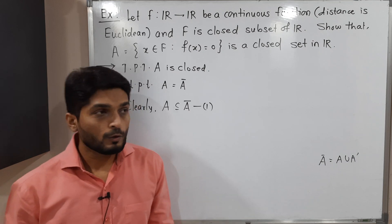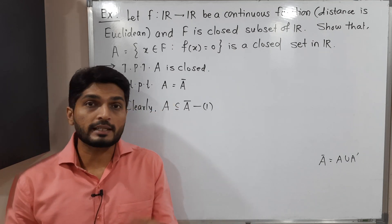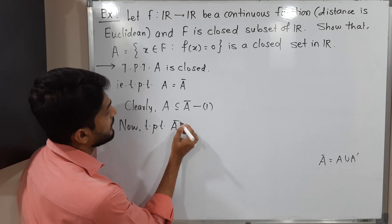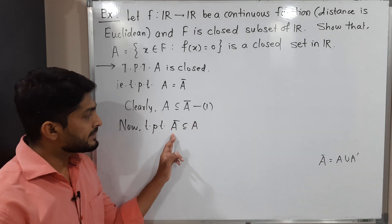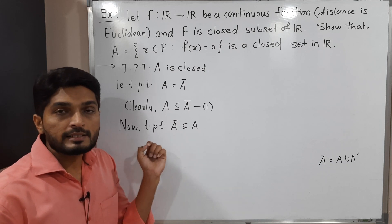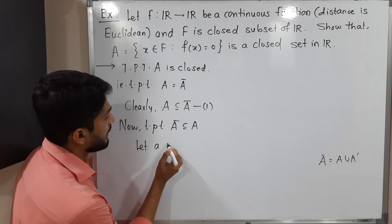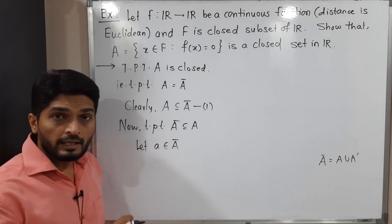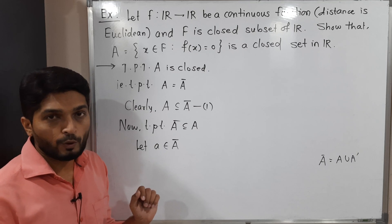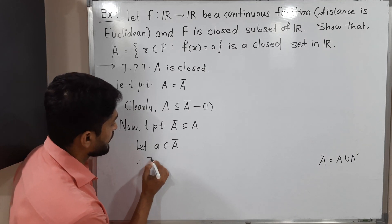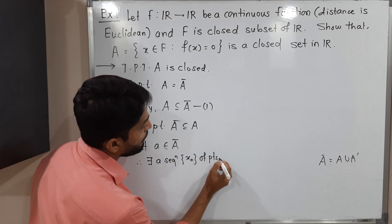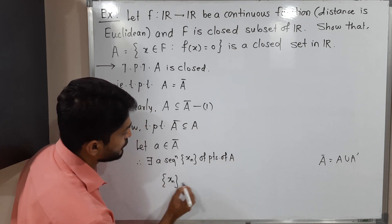We proved the first set is a subset of the second. Now we need to prove the second set Ā is a subset of A. To prove this, we take any arbitrary element from Ā and show it is in A. So let a belong to Ā. Since a is in the closure of A, we can find a sequence of points of A which converges to this point. Therefore there exists a sequence xₙ of points of A which converges to a.